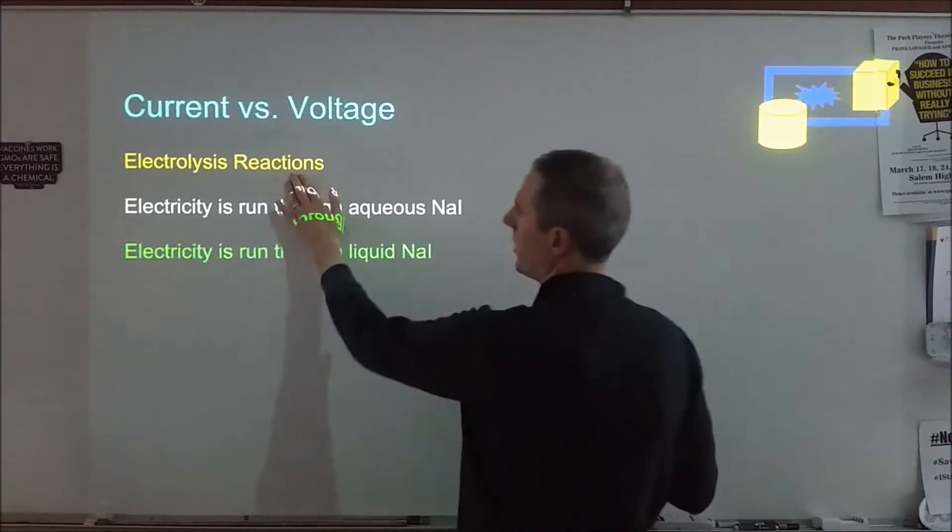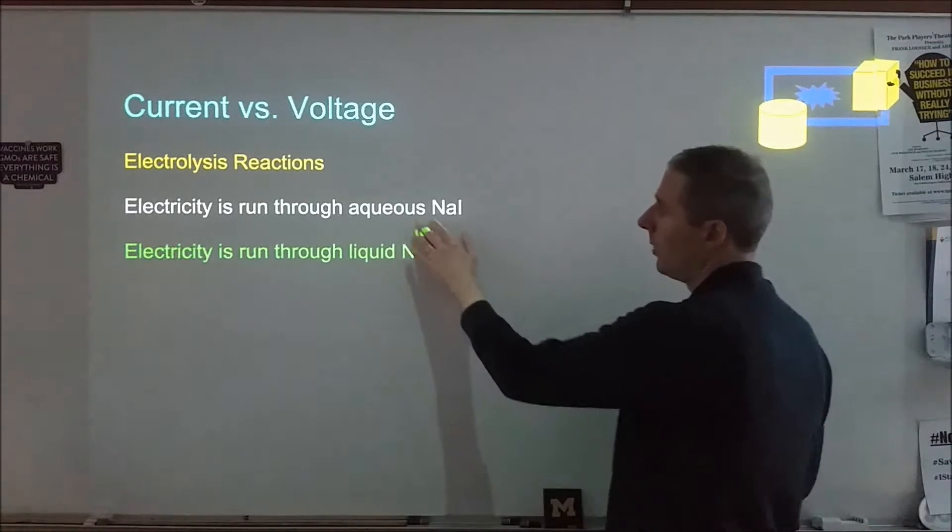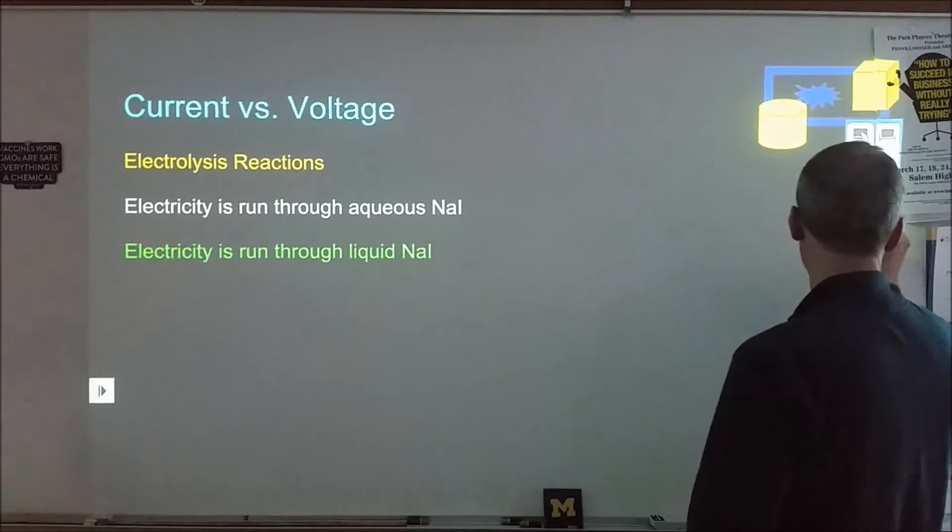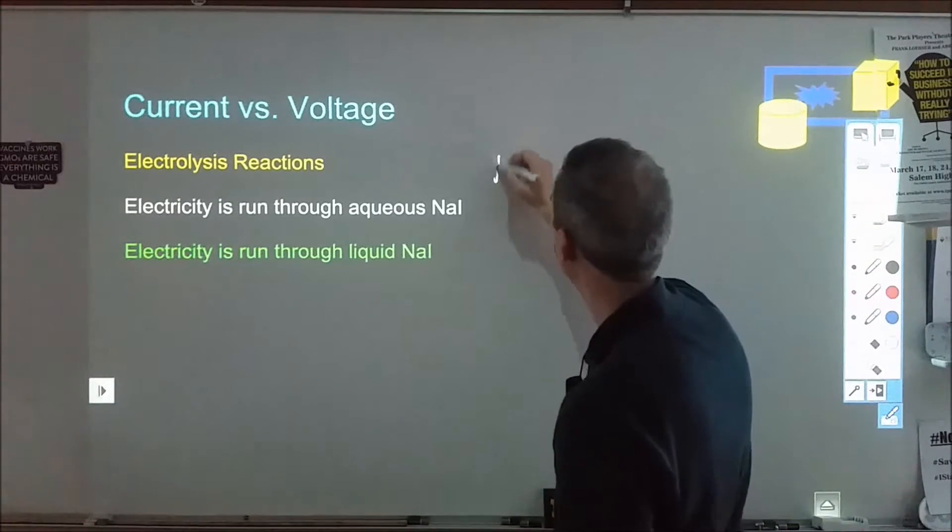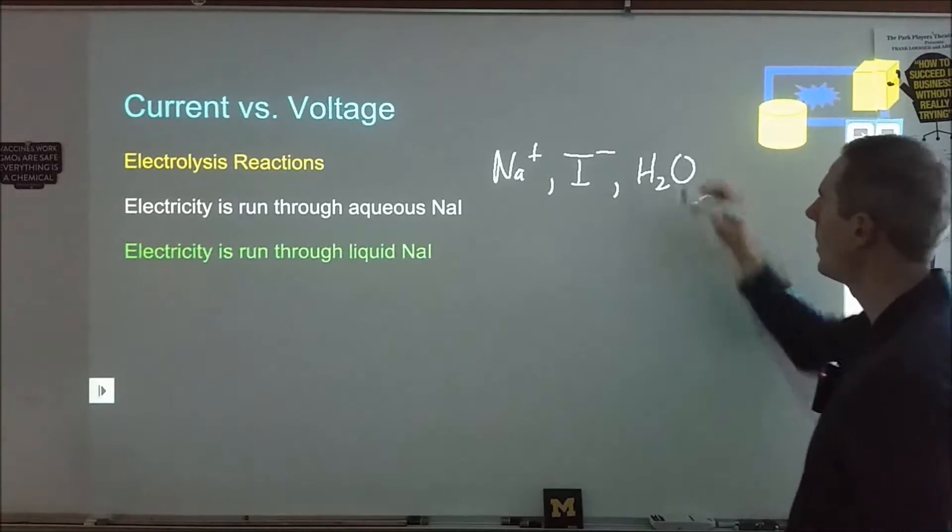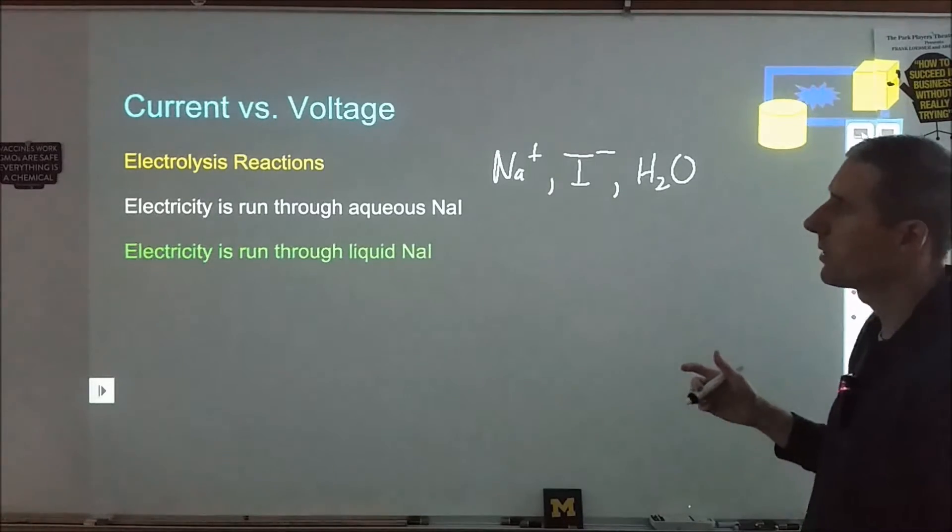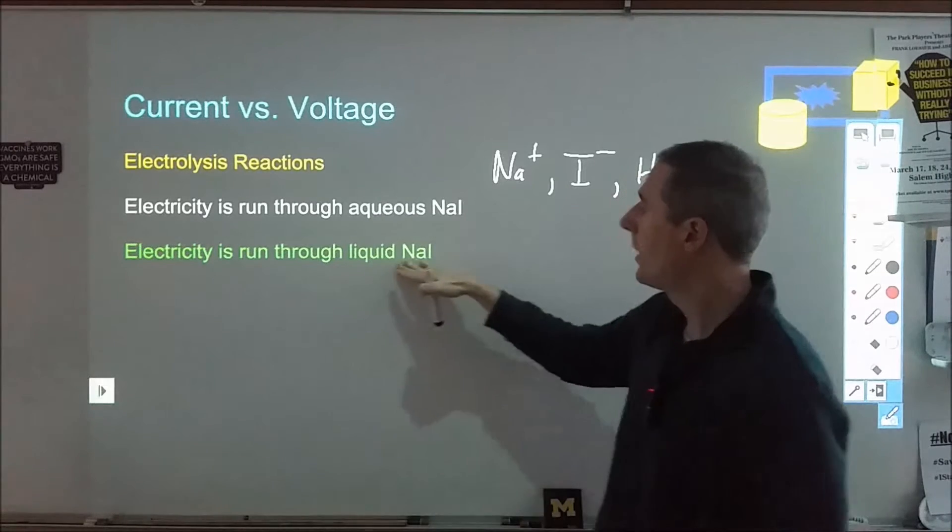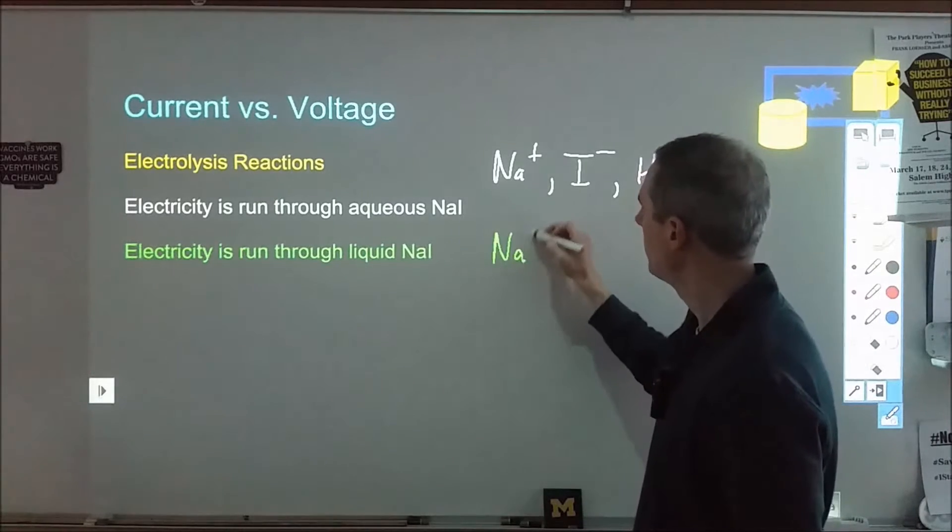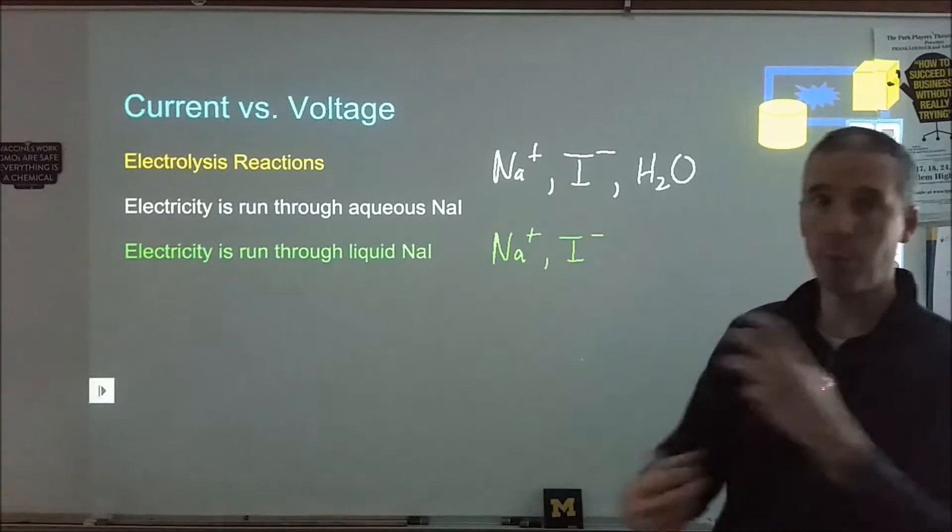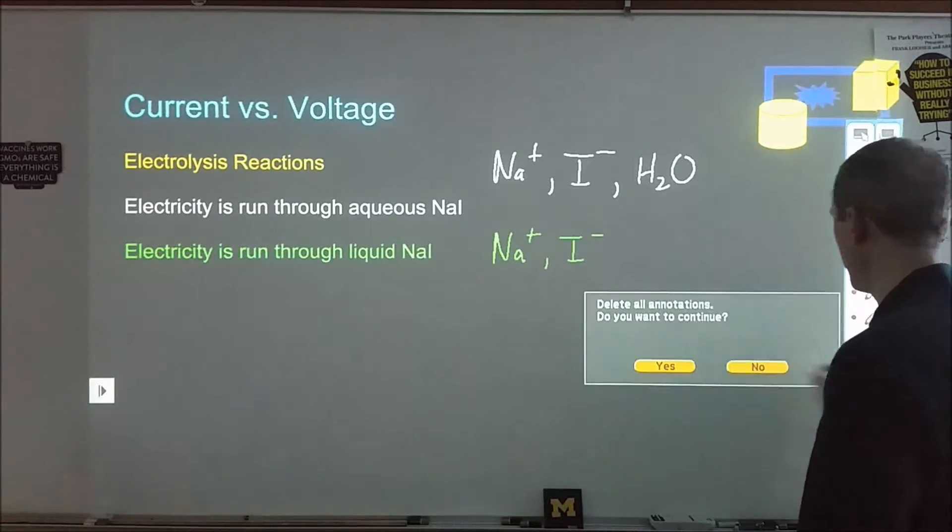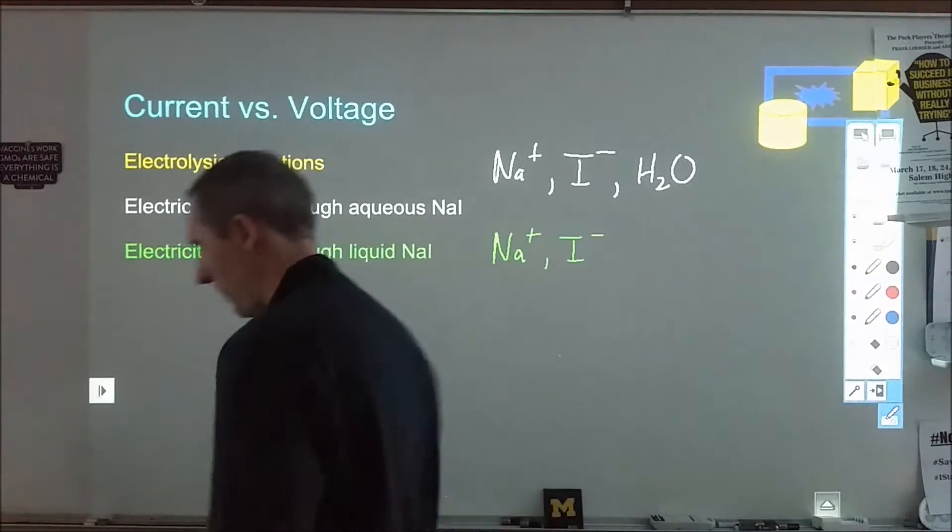We're going to start with electrolysis reactions. We're going to look at electricity being run through two different things: one is aqueous sodium iodide, one is liquid sodium iodide. In aqueous sodium iodide, we have four things available: sodium ions, iodide ions, and water. The water can do two different things. That's different than running it through liquid sodium iodide. If you melt salts, you'll have sodium cations and iodide anions that break free from their bonds and are able to move around. There's no water present, so it changes the game a little bit.